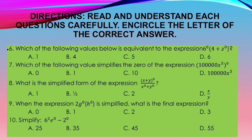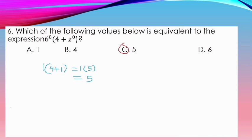Let's check your work. For number 6, our answer is 5. Why? Our 6 to the power of 0 equals 1. Then inside the parentheses, 4 plus 1 — because 1 came from z to the power of 0 — gives 4 plus 1 equals 5. So 1 times 5 equals 5.